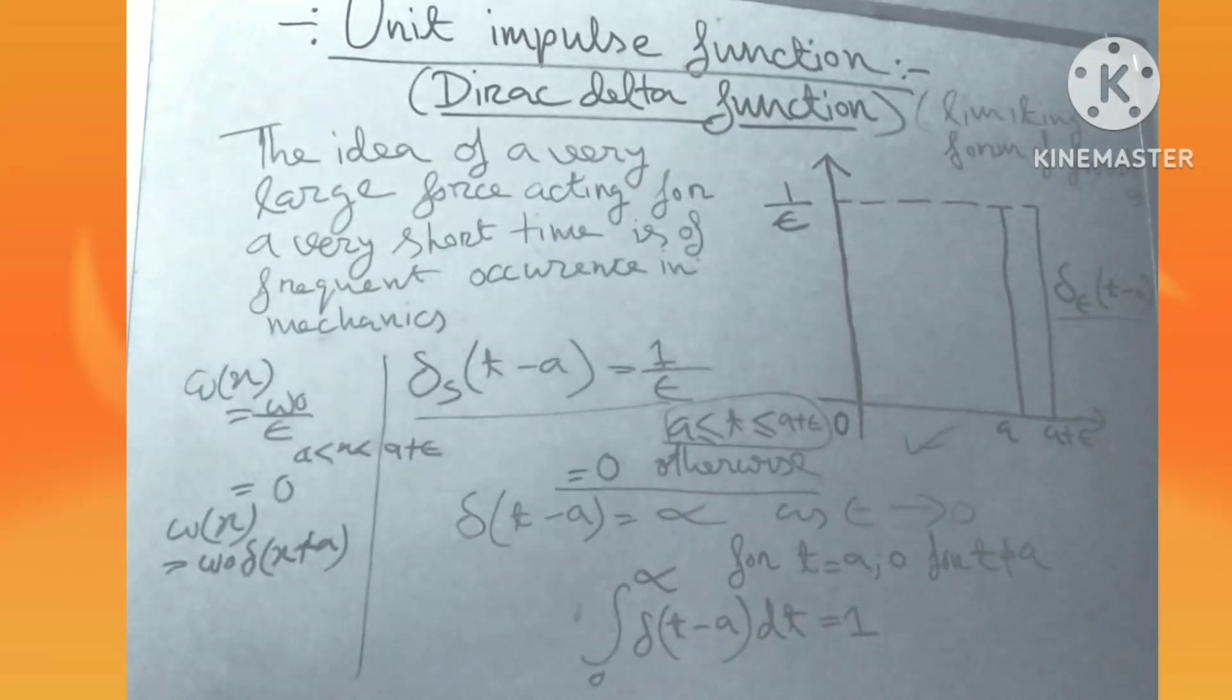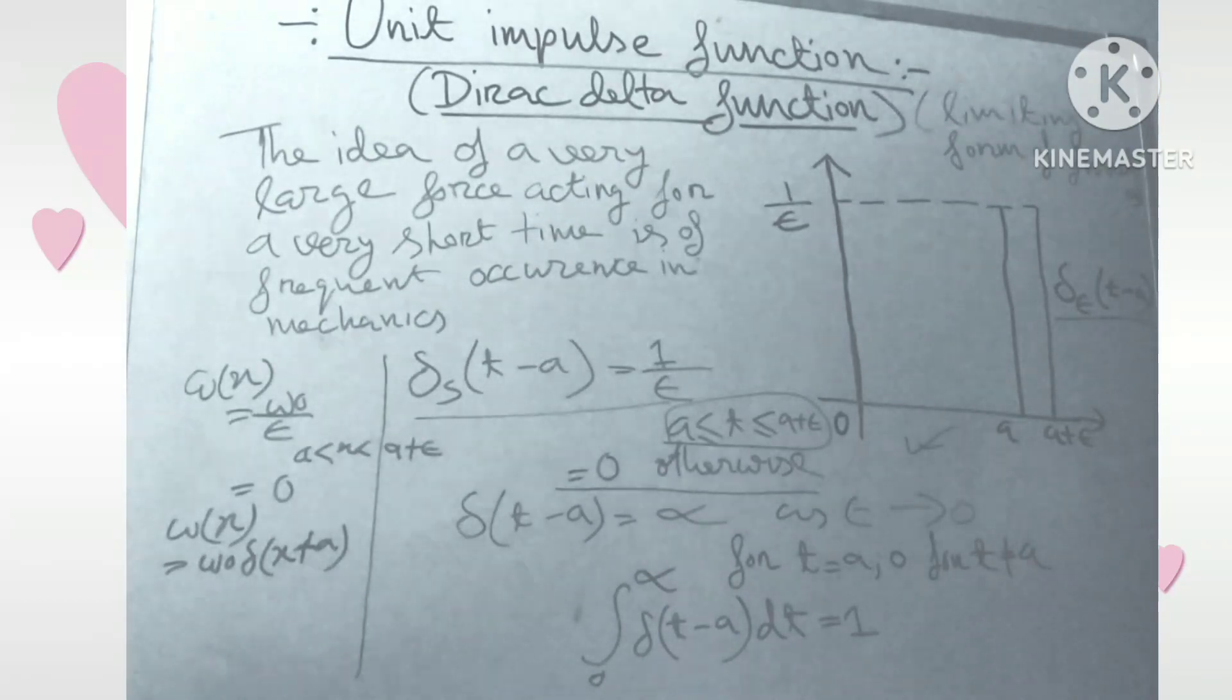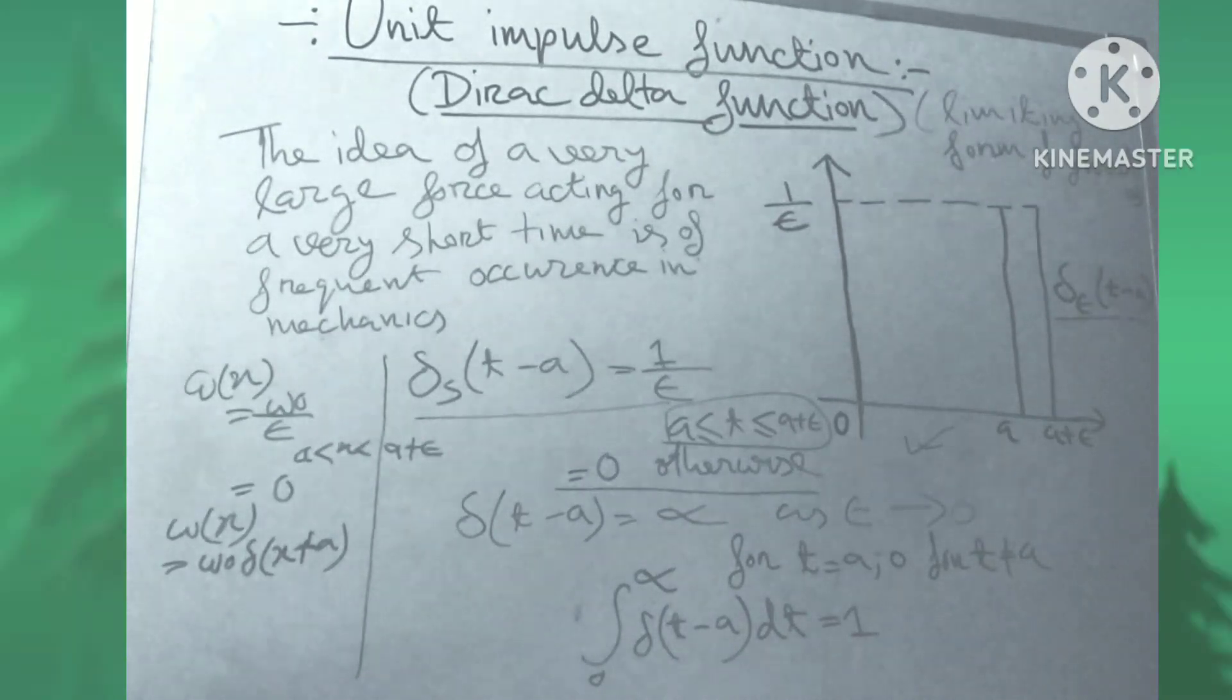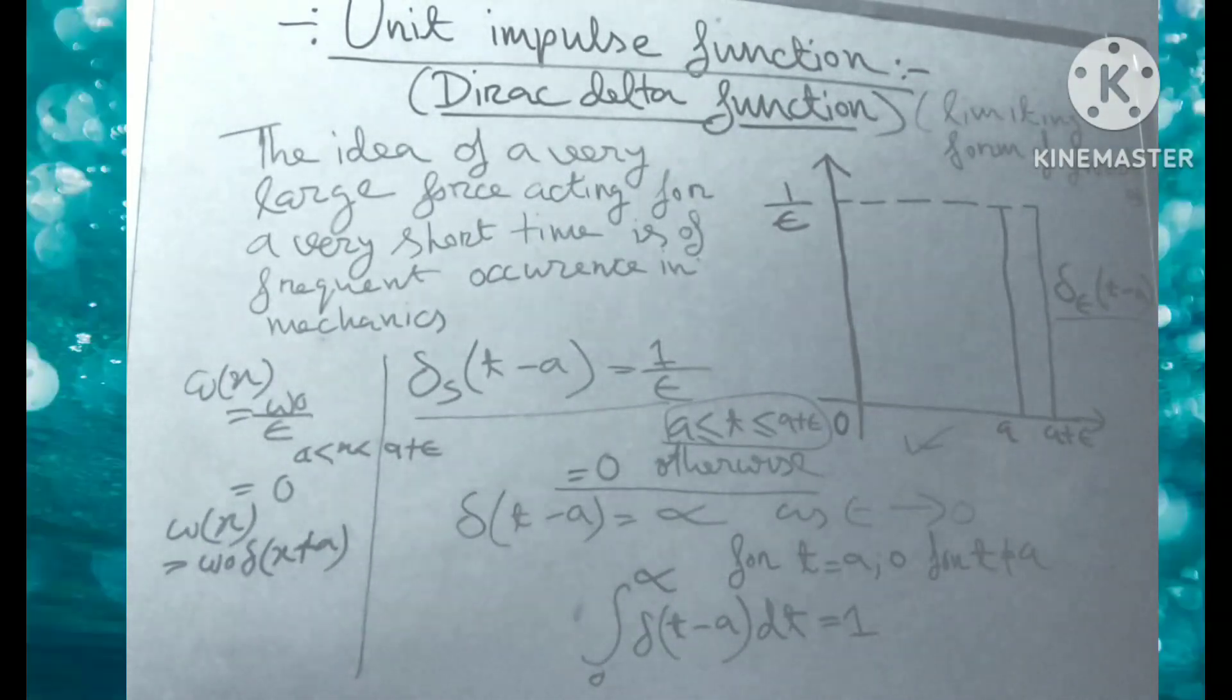The English physicist Paul Dirac in 1902-84, who was awarded the Nobel Prize in 1933 for his work in quantum mechanics. So friends, this delta function is also important for quantum mechanics.